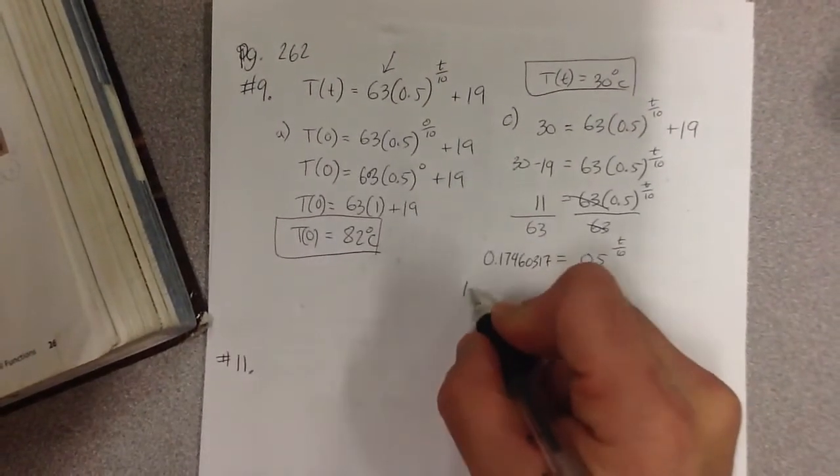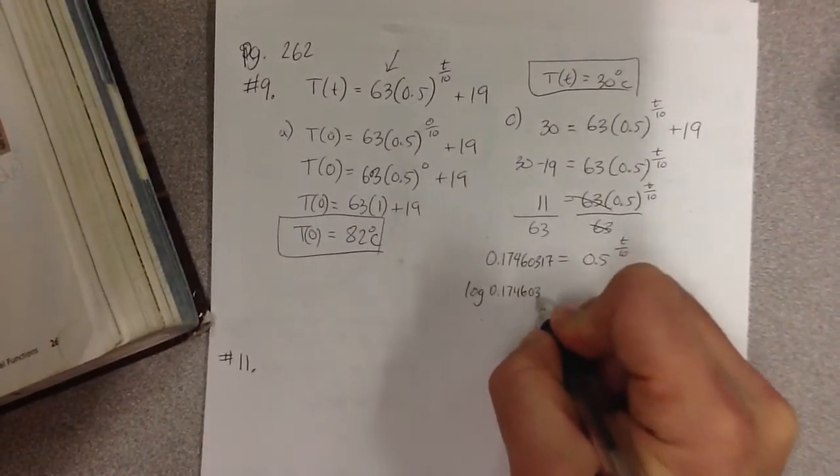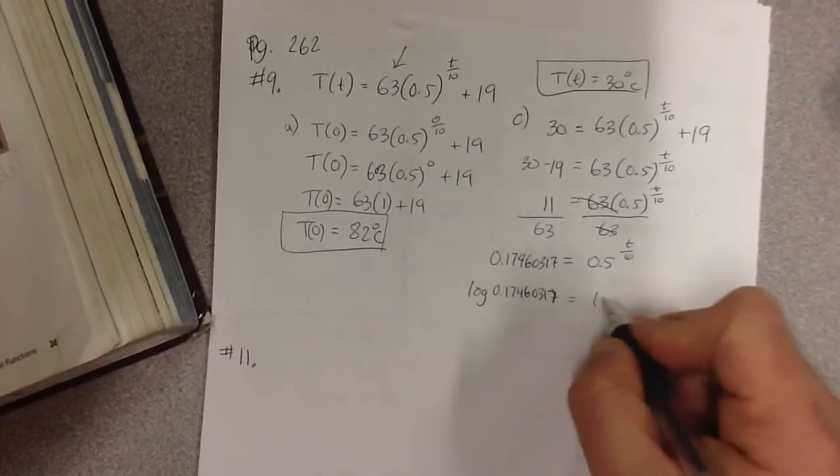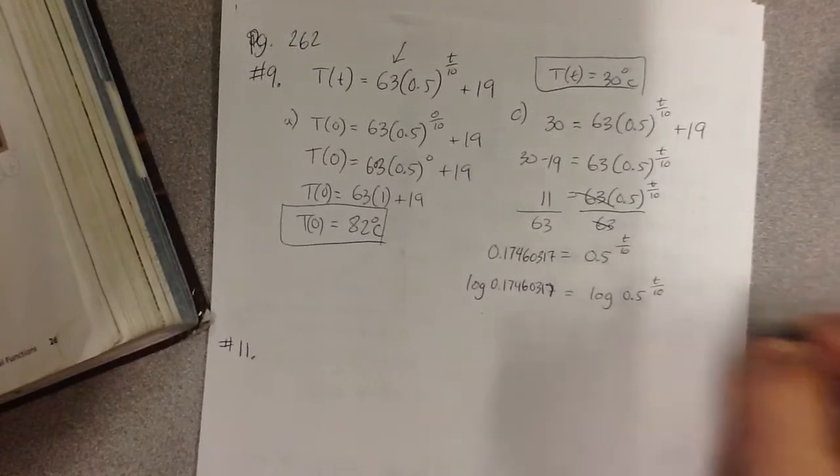The way to solve this is by using logs. So I'm going to take the log of both sides. So log of 0.17460317 on this side, and I'm going to take the log of 0.5 to the power of t over 10 on this side.